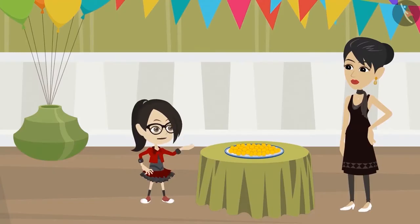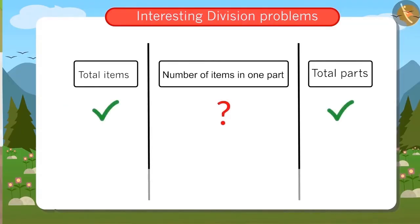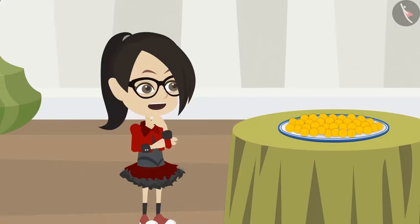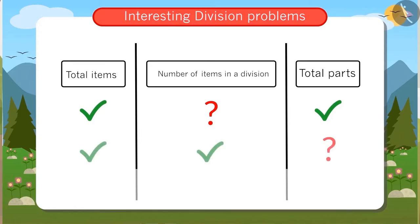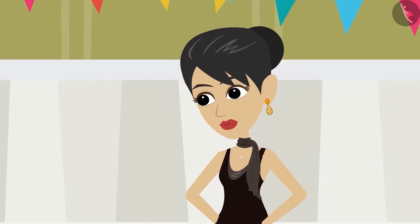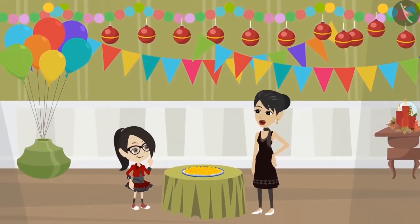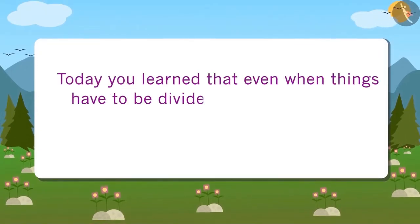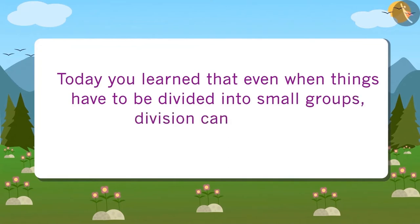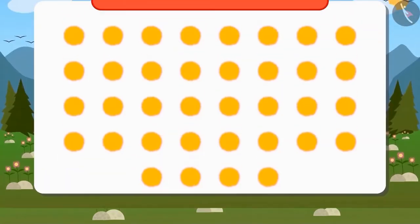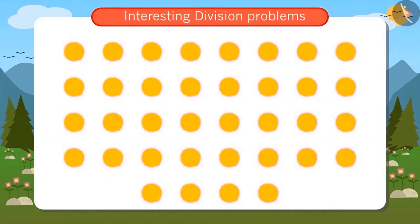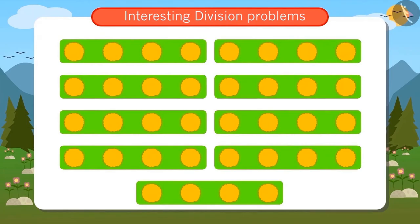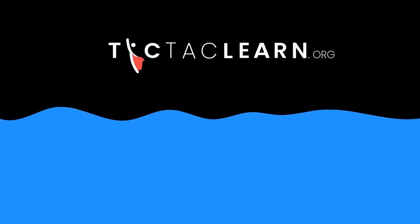Last time we learnt that when we are given the number of parts and have to find out the number of items in them, we use division. Today we learnt that when we know how many things will come in one part, we still use division. Yes, now go quickly. The ladoos are to be packed before the guests arrive. Today you learnt that even when things have to be divided into small groups, division can be useful. Just as you saw, Vandana dividing thirty-six ladoos into groups of four.